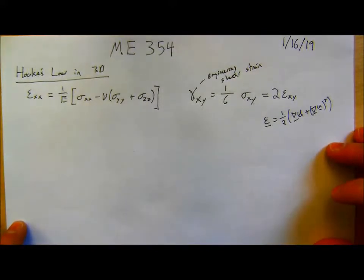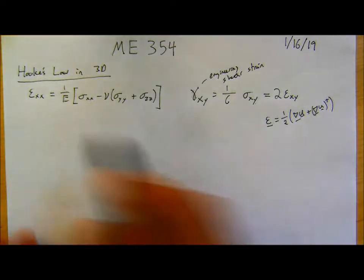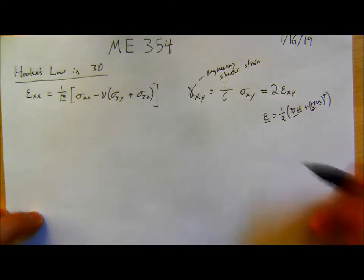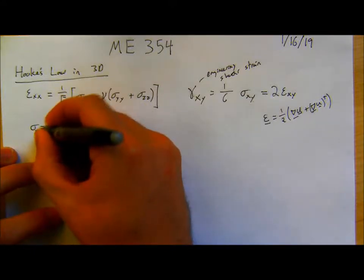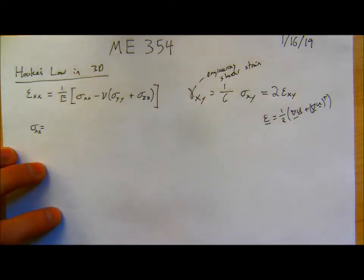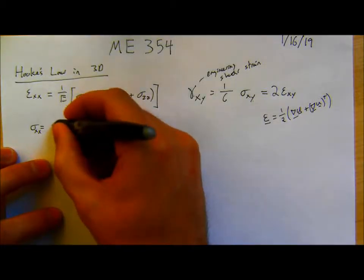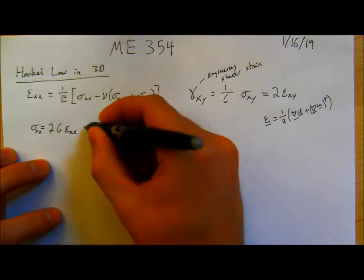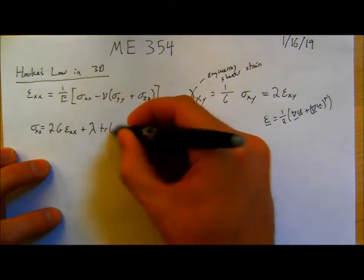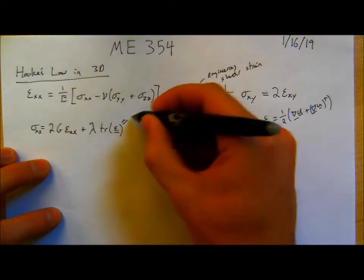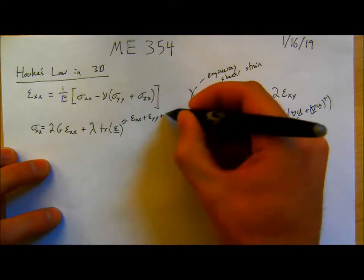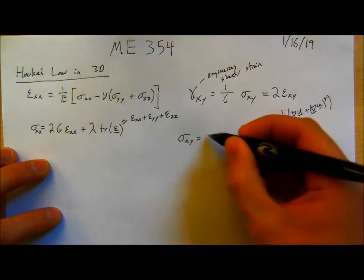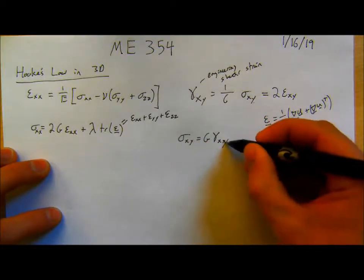There are similar equations for gamma_xz and gamma_yz. For sigma, if you pile these all together and invert them, we came up with sigma_xx equals 2G epsilon_xx plus lambda trace of epsilon, where the trace of epsilon is epsilon_xx plus epsilon_yy plus epsilon_zz. Then we had sigma_xy equals G gamma_xy which equals 2G epsilon_xy.